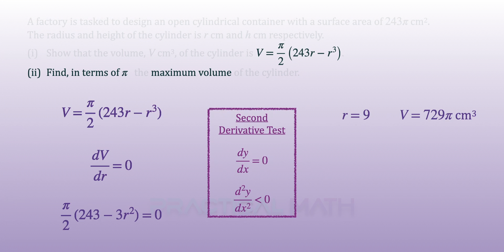To find whether this volume is a maximum or minimum, we will need to continue with the second derivative test, where we differentiate a second time and prove that it is negative. Differentiating a second time the V equation gives a result of (π/2)(-6r), where -6r is the result of differentiating -3r².